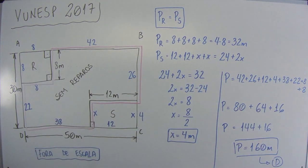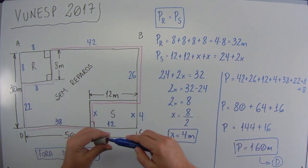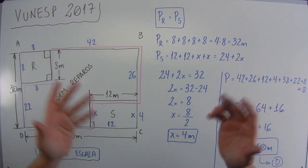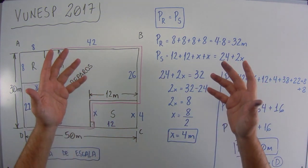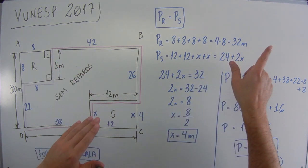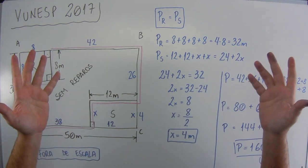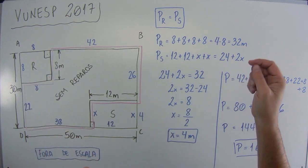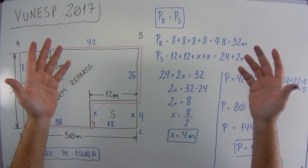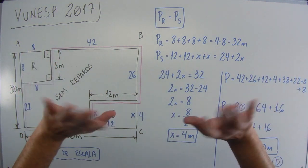Beleza? Espero que você tenha entendido essa questão. Ela não é difícil, basta que você lembre que perímetro é a soma do contorno, ou de todos os lados. Se você tem dúvida em figuras geométricas, nessa parte de geometria, área, perímetro e volume, clica nessa letra aí que tem uma aula sobre isso. Certo? Muito obrigado por assistir essa questão até aqui. Não deixe de se inscrever no canal, curta, compartilhe, e vamos para a próxima questão. Muito obrigado e tchau!